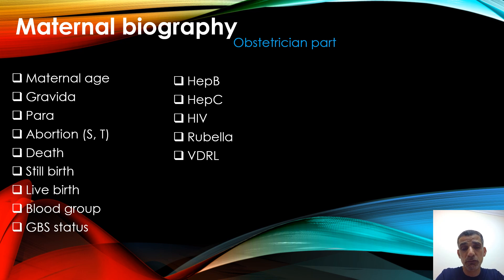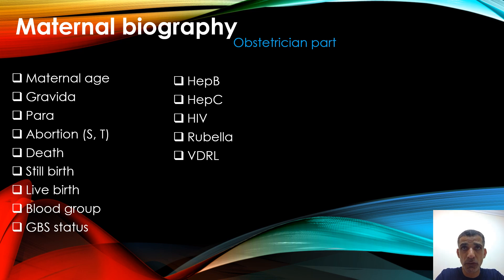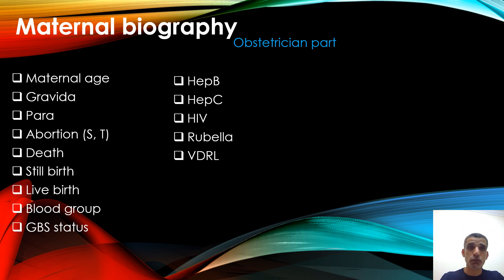The obstetrician should provide some maternal biography. These biographies include but are not limited to: age, gravida, para, abortion history, history of death especially at fetal or neonatal periods, history of stillbirth, number of live births, blood group, Group B Streptococcal screening if done, urine culture, previous history of GBS status, vaccination history, and serology history — all should be documented.